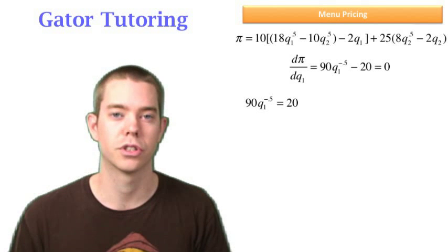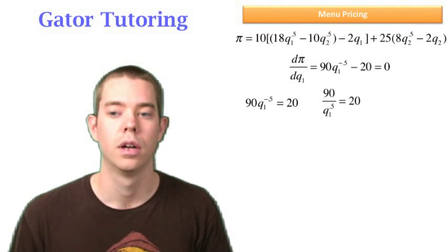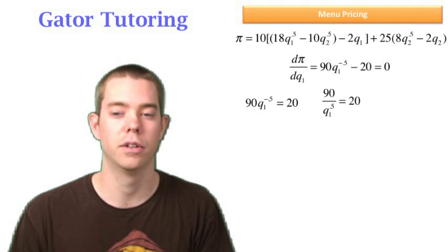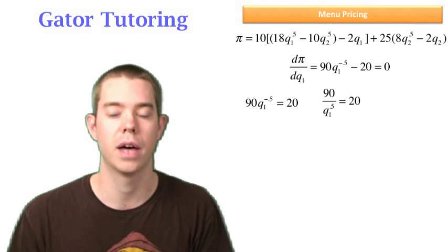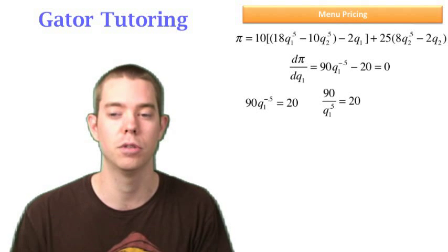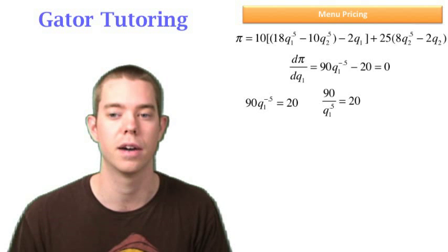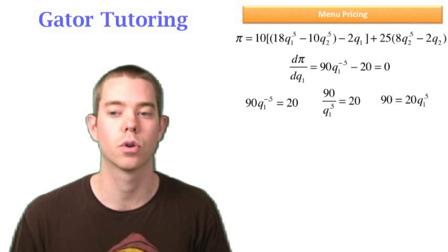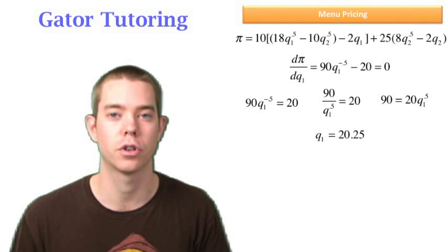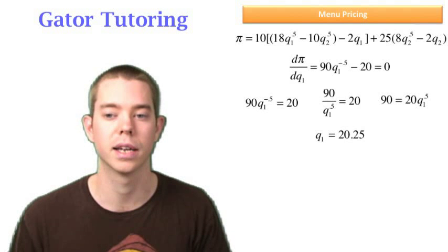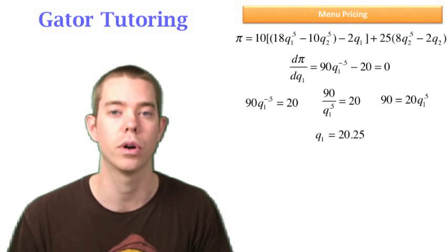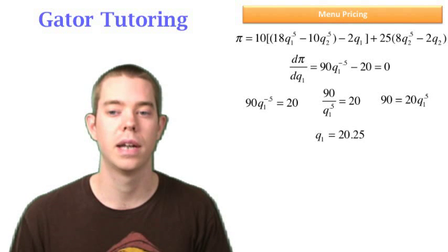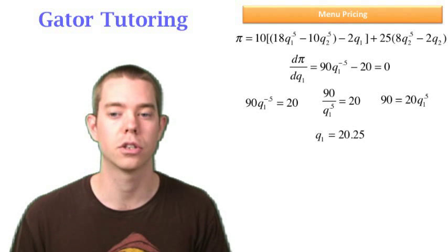Now I can solve for Q1. I first, you're setting equal to 0 of course. And we know that in the future I'm going to do this as a shortcut, but first I want to show you that that negative 0.5 could be a positive 0.5 on the bottom. So that Q1 raised to the negative 0.5 could be 90 over Q1 raised to the positive 0.5. I could then cross multiply and divide through by 20 and solve for Q1 and square it. And I get that Q1 is equal to 20.25.